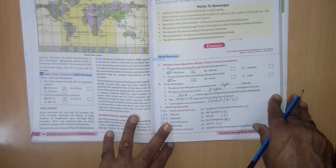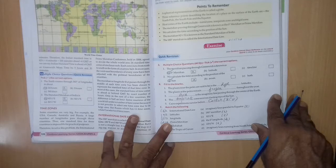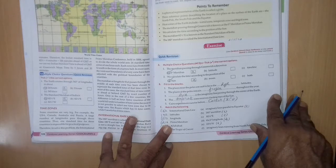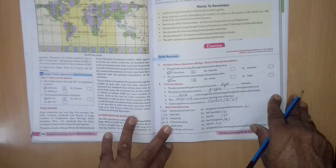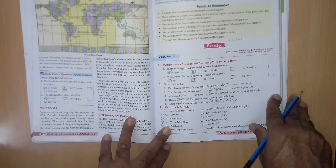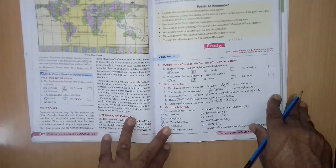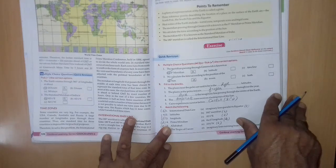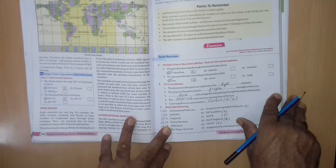3rd, dash is the imaginary line passing through the center of the earth. It is axis. 4th, the dash zone receives slanting rays of the sun. It is temperate. 5th, Karyo experiences sunrise before dash. It is Kantor 81 degree west.